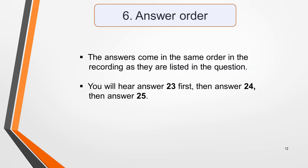The answers will come in the same order in the recording as they're listed in the question. So for this question you'll hear answer 23 first, then answer 24 and finally answer 25. This makes it easier to pick out the answers than if they were in a random order.